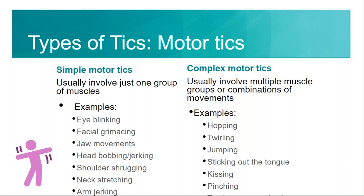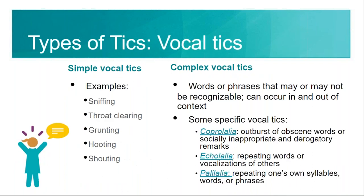Complex motor tics usually involve multiple muscle groups or combinations of movements. Examples can be hopping, twirling, jumping, sticking out your tongue, kissing, or pinching. So with complex motor tics you might be touching other people.